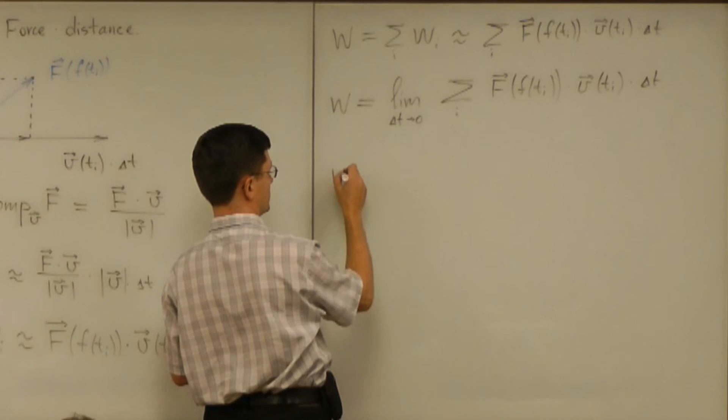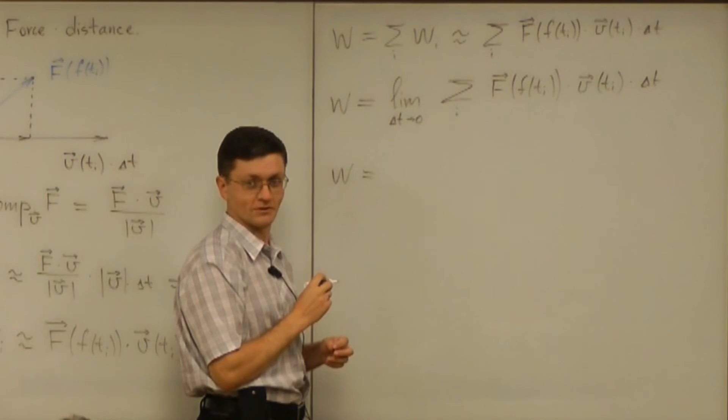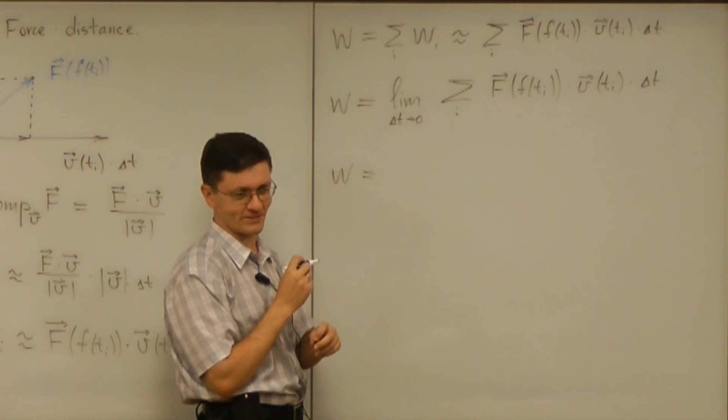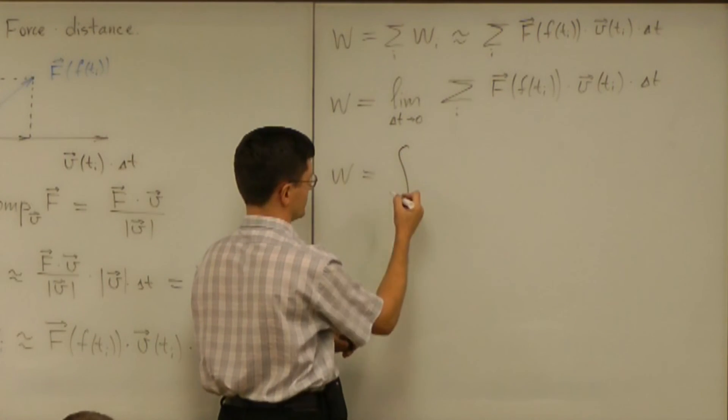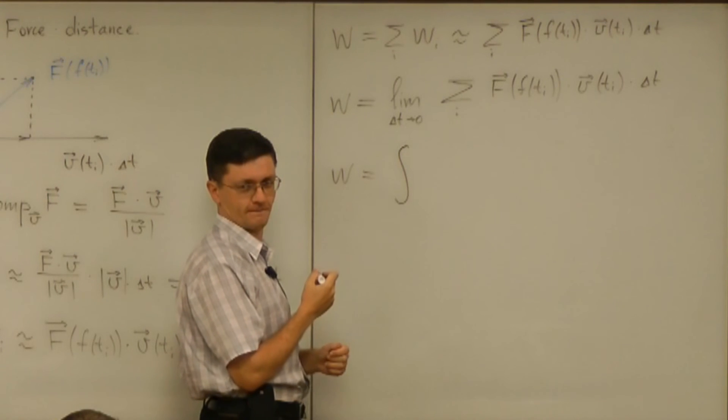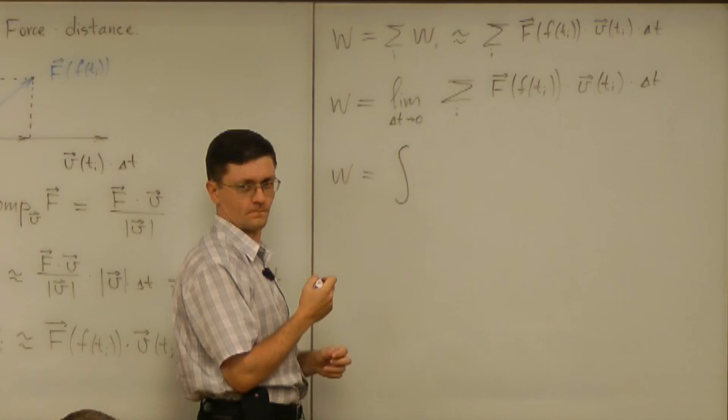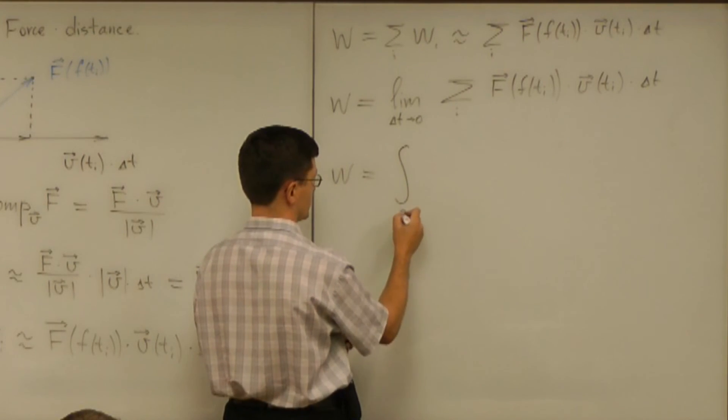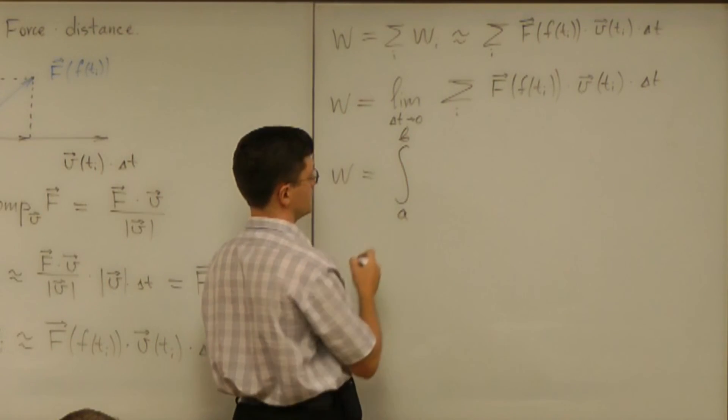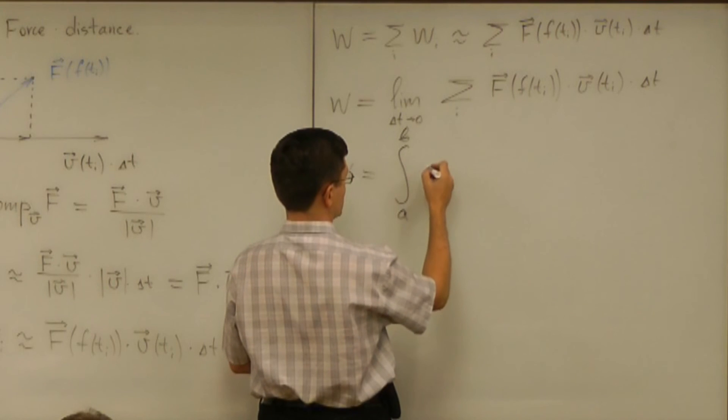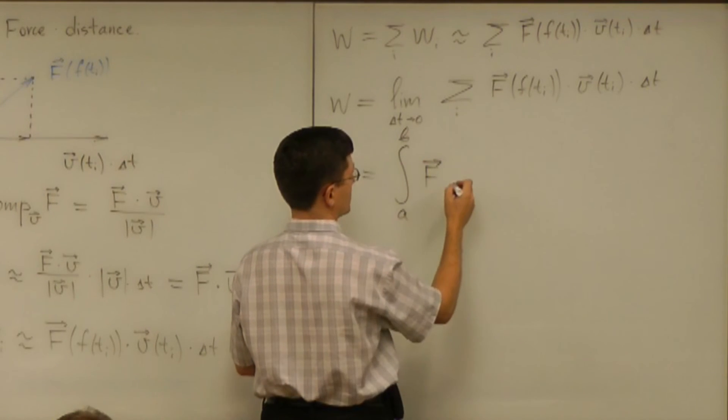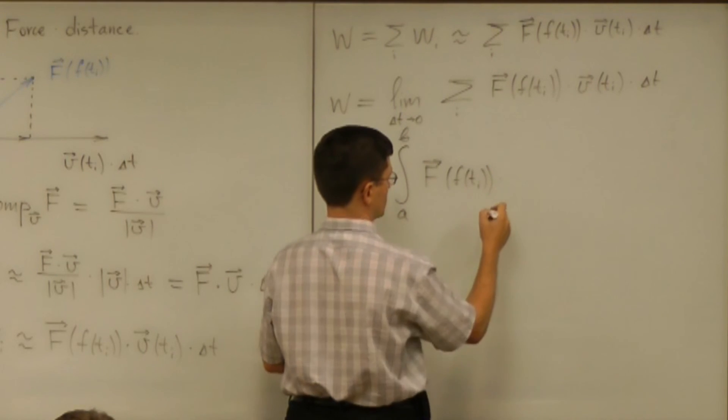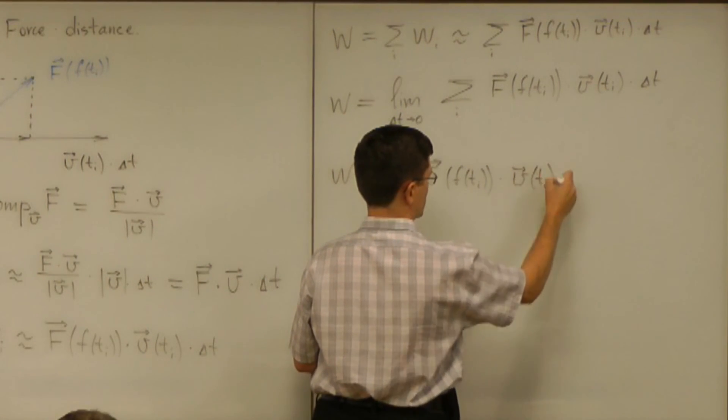And then if you do, why don't you tell me what the limits are? A and B. The time changes from time A to time B. Of the F of Ti dot product V of Ti.